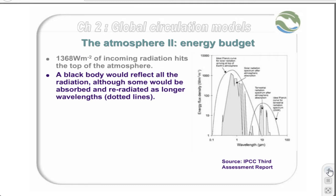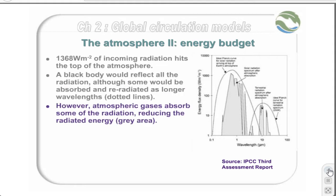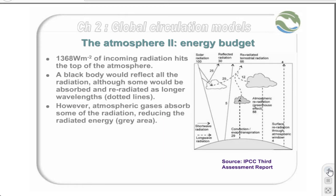If the Earth were a perfect black body, it would absorb the radiation and then re-radiate it at a longer wavelength, as shown on the dotted lines. However, the atmosphere absorbs much of the radiation, and the Earth's hypothetical surface temperature of 255 Kelvin is considerably lower than the actual 288 Kelvin. This effect is known as the greenhouse effect.